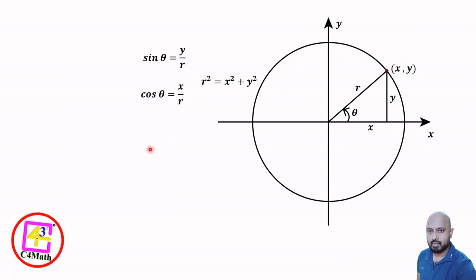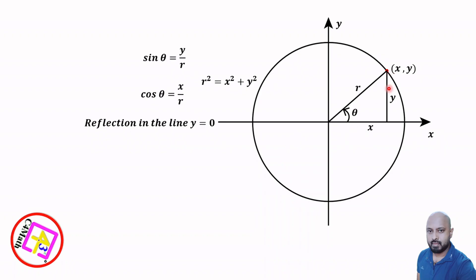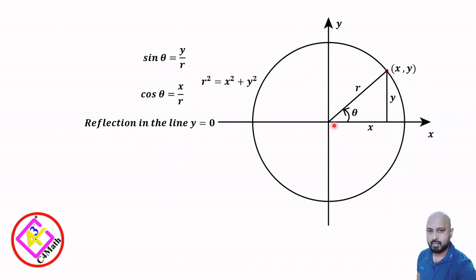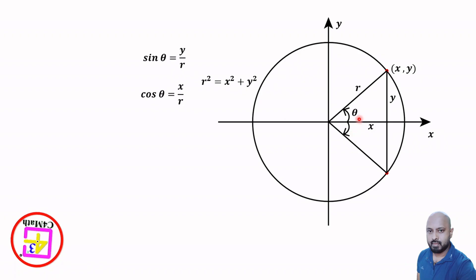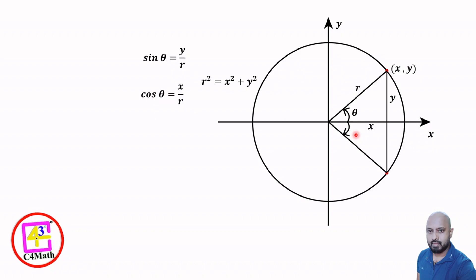Next, we take the reflection of this triangle in the line y equals zero, that is the x-axis. When we take the reflection, the triangle flips down. The angle formed in the original triangle is anticlockwise, which is the positive direction. The reflected triangle's angle is in the clockwise direction, which is the opposite direction, so we take it as negative theta.